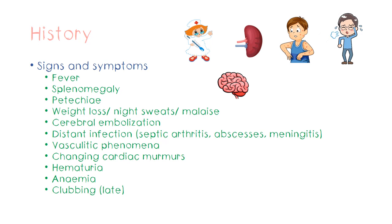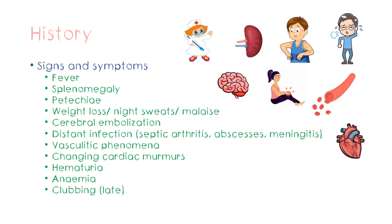This is one of the features of distant infection caused by infective endocarditis. You can also get septic arthritis, meningitis, and abscesses in other organs by the same principle. Vasculitic phenomena include Janeway lesions and splinter hemorrhages, which will be discussed in the examination section. You can also get a change in cardiac murmurs during the illness, as commonly present regurgitation murmurs tend to disappear when the illness progresses — the more valve destruction, the less turbulence and the murmur disappears.